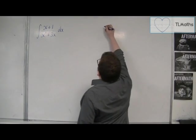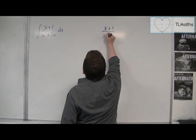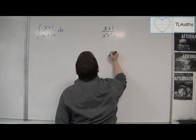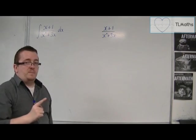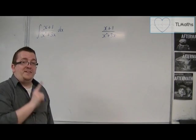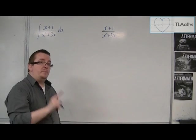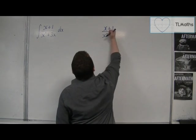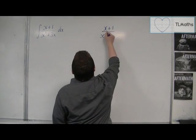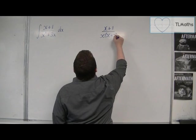So we're going to get the x plus 1 over x squared plus 3x. Now, in order to split this into partial fractions, I first need to identify that the denominator can be factorised. So I'm going to factorise it. So I'm going to bring the x out the front and have it as x plus 3 inside the bracket.